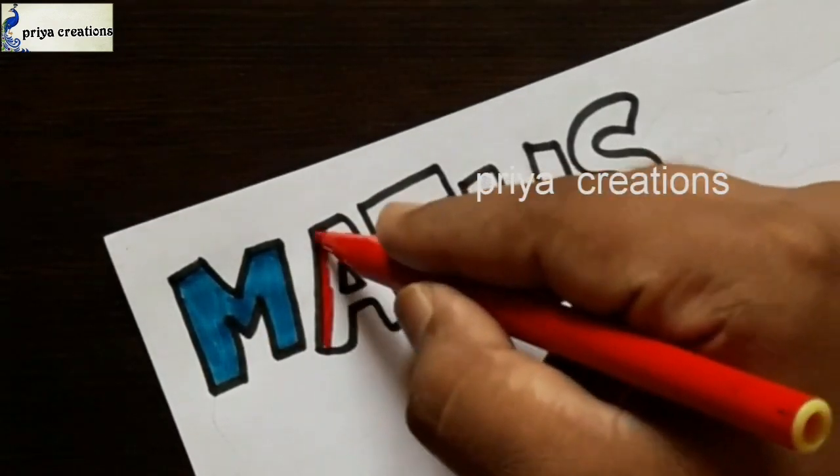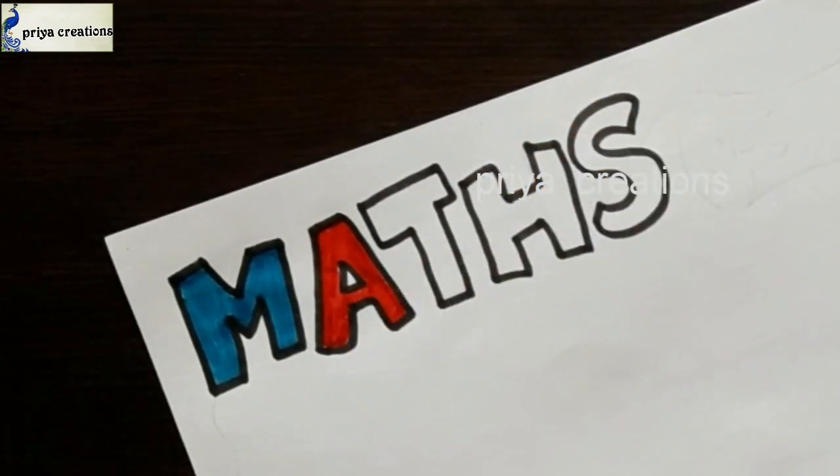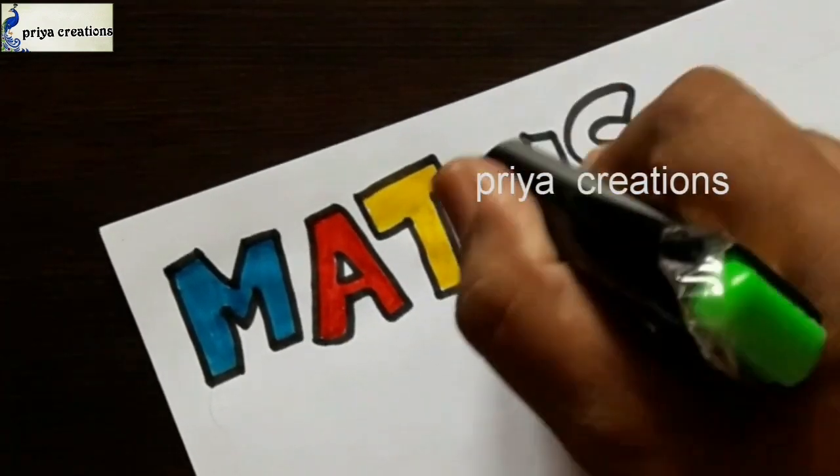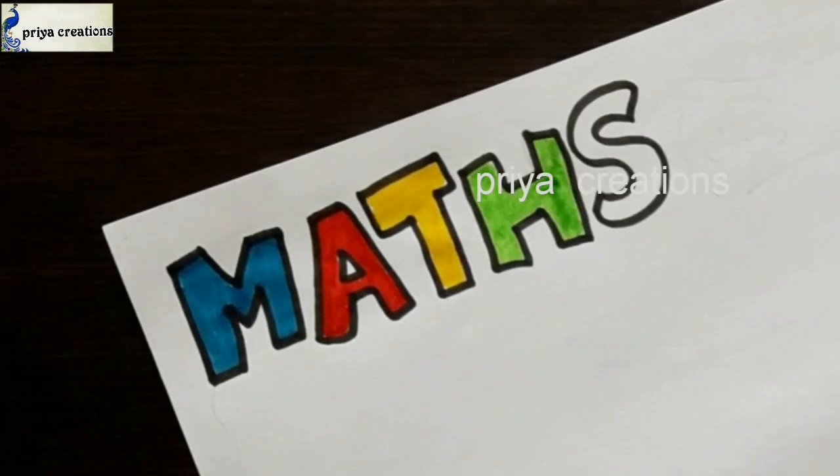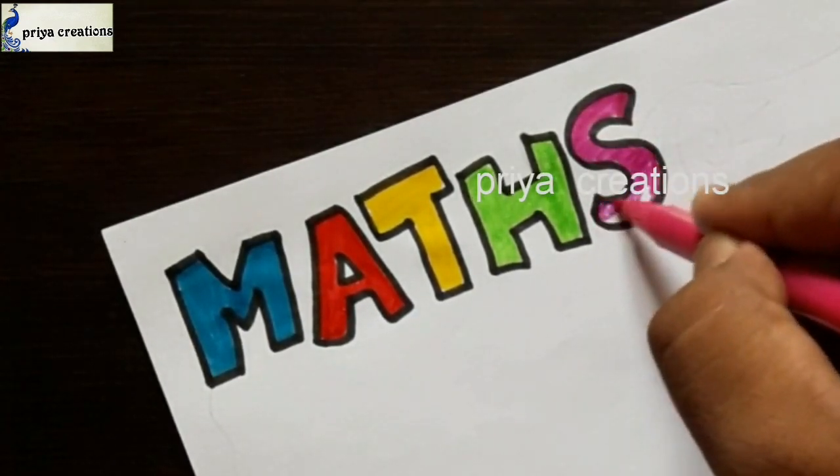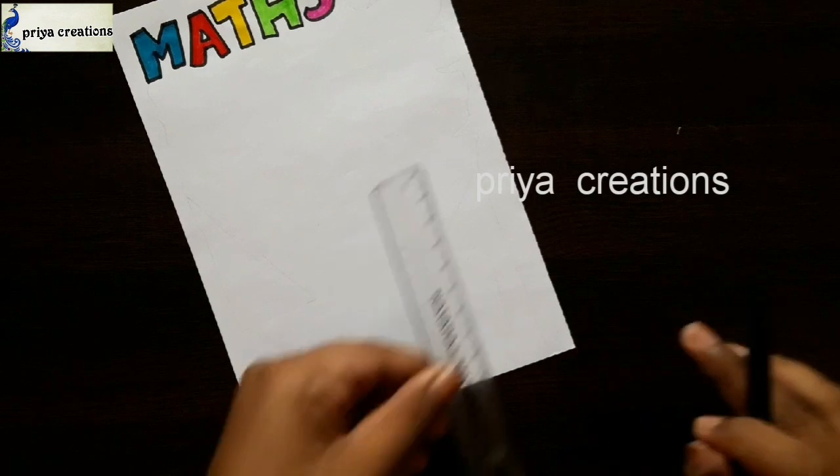This is red blue colored brush pen. Here I am using red colored sketch pen for A letter. Yellow colored brush pen. This is green colored highlighter for H letter. This is pink colored sketch pen for S letter.